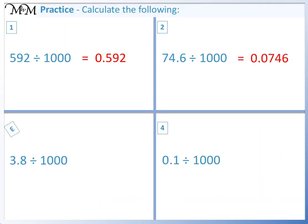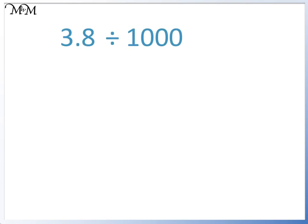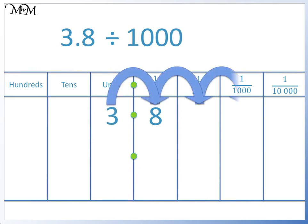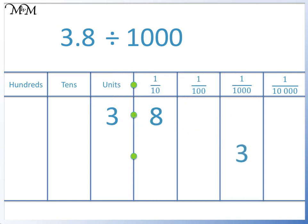Question 3: 3.8 divided by 1000. We move the 3 three places to the right: 1, 2, 3. The 8 then follows. We put a zero in the units column and in the two spaces after the decimal point. 3.8 divided by 1000 equals 0.0038.